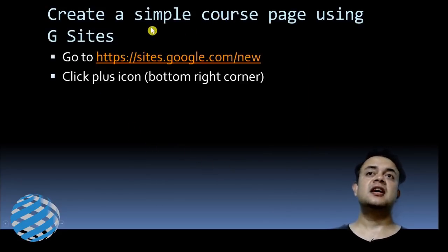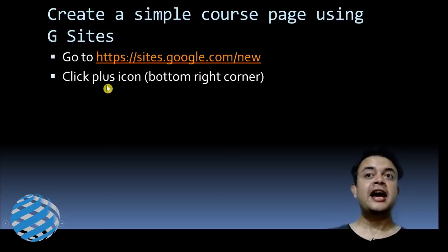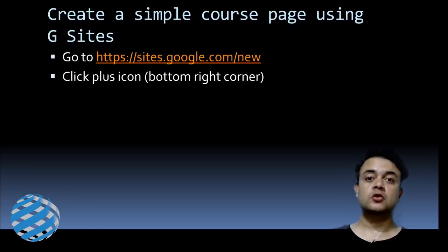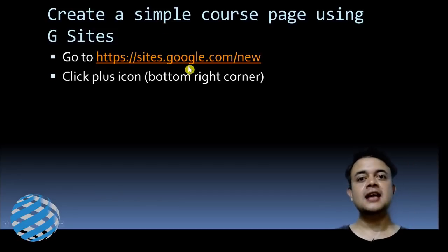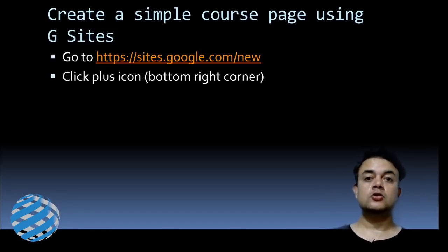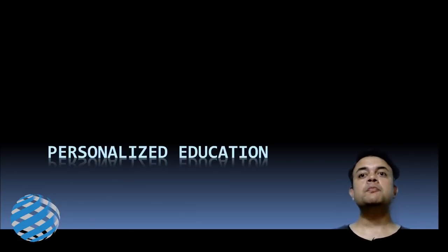To create a simple course page using Google Sites, go to sites.google.com, click the plus icon in the bottom right corner, and start designing. The best approach is to just start and learn by doing. Remember that whatever changes you make will not be published unless you press the blue 'Publish' icon on the top right. Once you click publish, the site is live on the internet — and it's completely free.